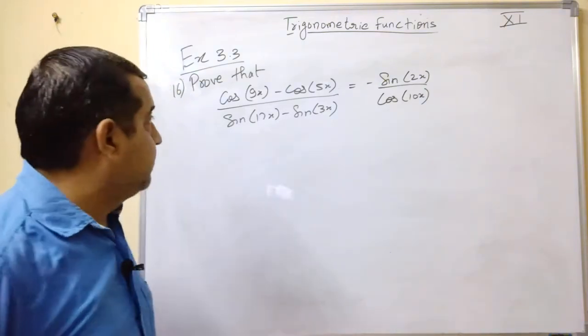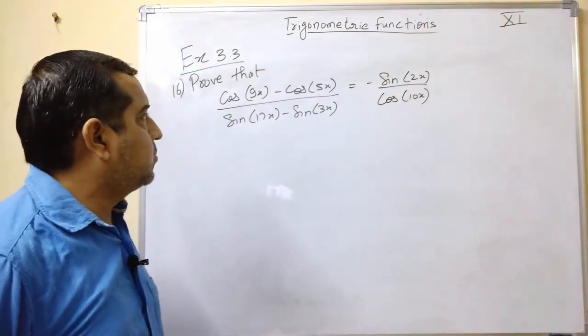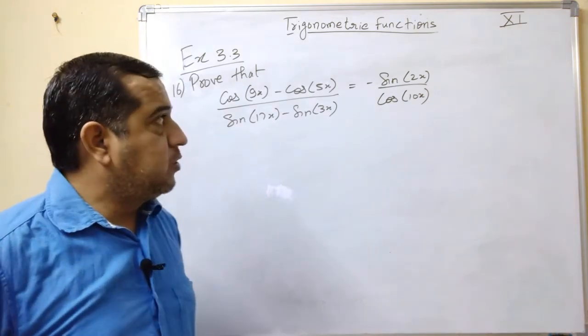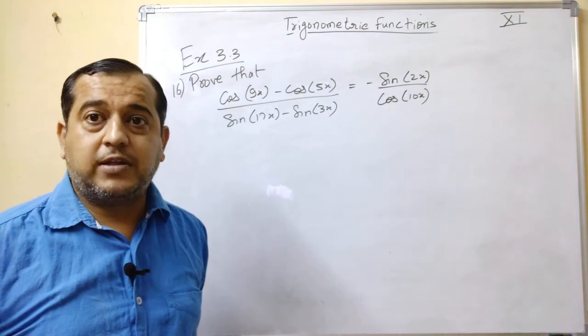Proceeding further, we come to question number 16. Prove that cos 9x minus cos 5x upon sin 17x minus sin 3x is equal to minus sin 2x upon cos 10x.